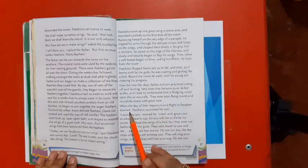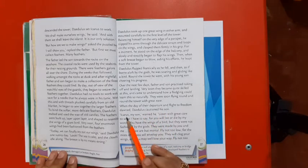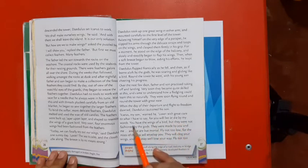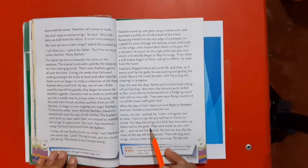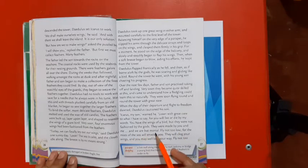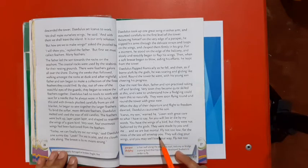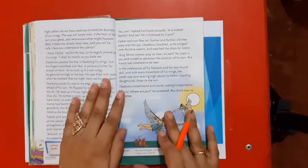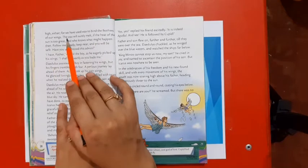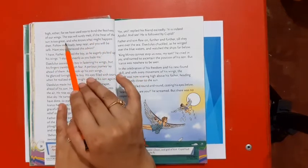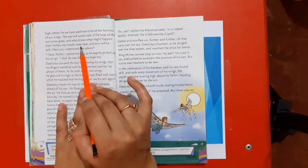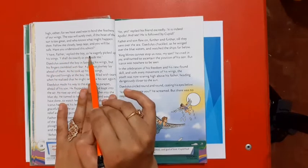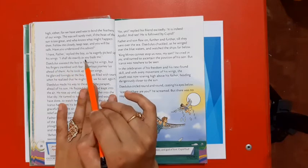When the day of their departure and flight to freedom dawned, Daedalus cautioned his son. Icarus, my son, warned he, listen with great care to what I have to say, for you will live or die by my words. You have the wings of a bird, but they were not fashioned by the gods. They were made by you and me, and we are but mortal. Fly not too low, for the mist of the sea will envelop you. They will clog your wings and you may well lose your way. Fly not too high either, for we have used wax to bind the feathers of our wings. The wax will surely melt if the heat of the sun is too great, and who knows what might happen then. Follow me closely, keep near, and you will be safe. Have you understood this advice? I have, father, replied the boy as he eagerly picked up his wings. I shall do exactly as you bid me.